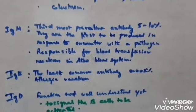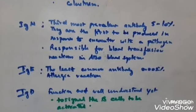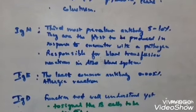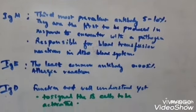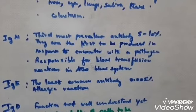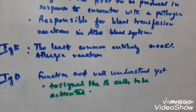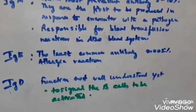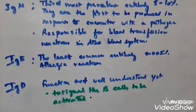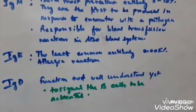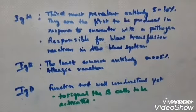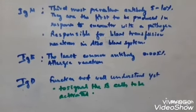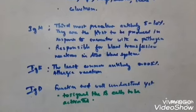IgE — immunoglobulin E — is the least common antibody, making up only 0.002 percent of total antibodies, and is mainly involved with allergic reactions. IgD — immunoglobulin D — is not fully understood, but it is believed to signal B cells to be activated and create immune responses.